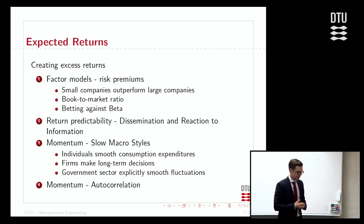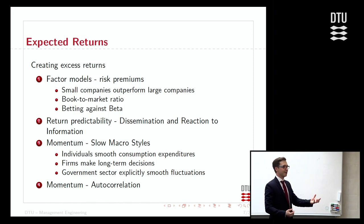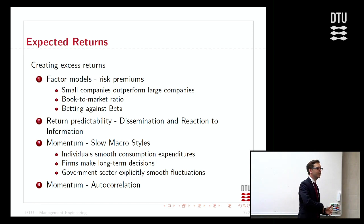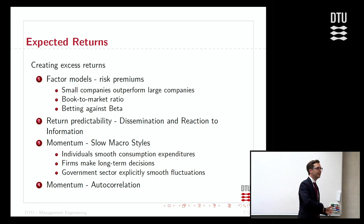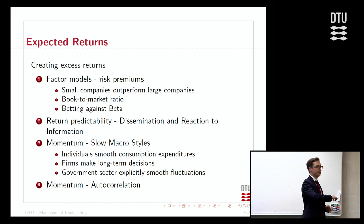Another prominent factor used in tactical asset allocation is the momentum factor: assets going up have a high probability of continuing up, and assets going down tend to continue down. One reason for this is slow macro dynamics — individuals smooth consumption over time, firms make long-term decisions, and governments explicitly smooth fluctuations. This creates return predictability because with much of the noise removed, it becomes easier to forecast what will happen.